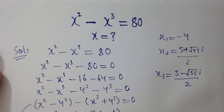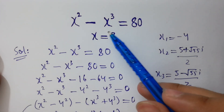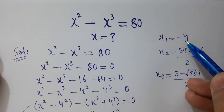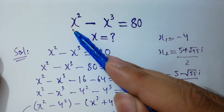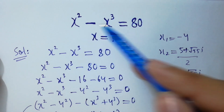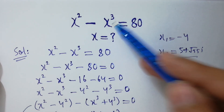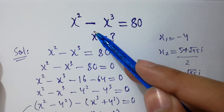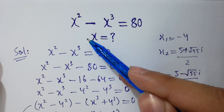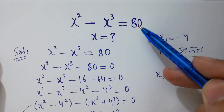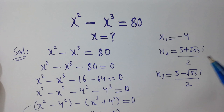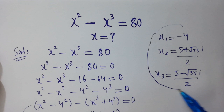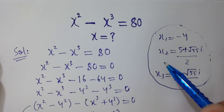Now let's verify: putting x1 equals negative 4 into the original equation, we get (negative 4) squared minus (negative 4) cubed equals 16 minus (negative 64) equals 16 plus 64 equals 80. This confirms x equals negative 4 is the correct real solution.